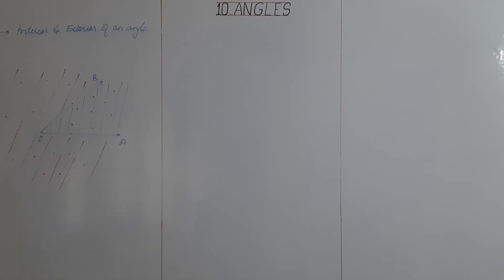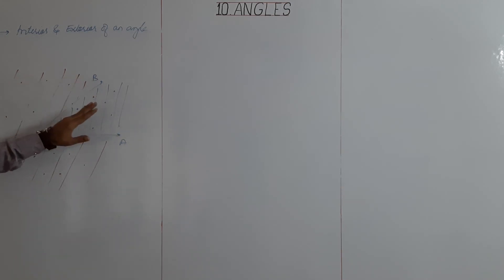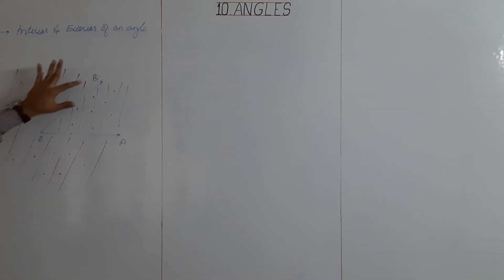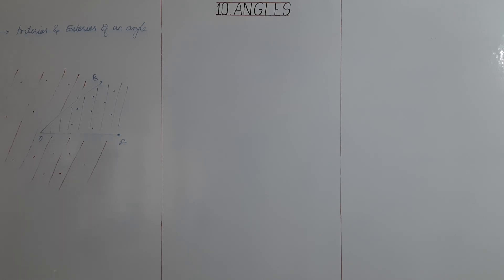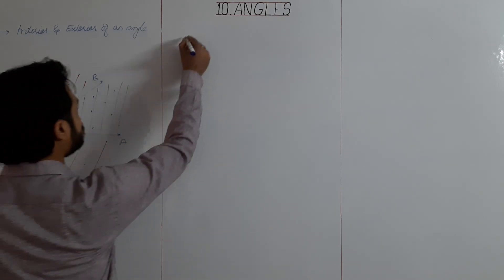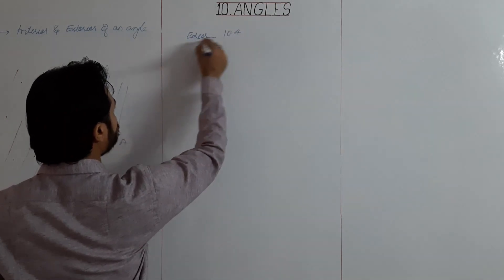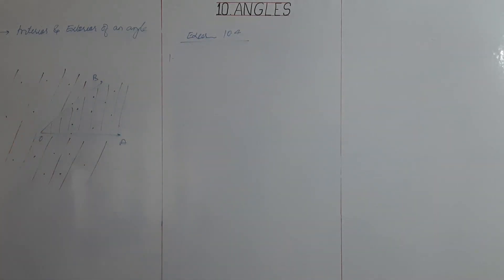So we have three types of points for any angle: interior points lying inside the angle, exterior points lying outside the interior, and points on the arm. Now moving to Exercise 10.4, first question.